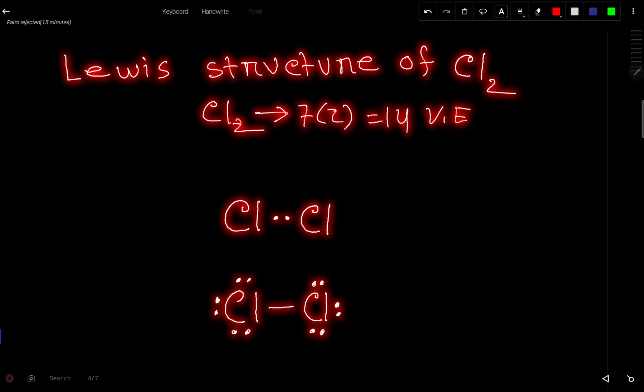To connect these two atoms we need two dots or a single bond. So for connecting we have used just two valence electrons and we have 12 valence electrons left.